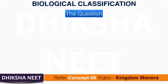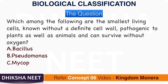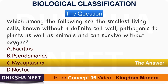Question 2: Which among the following are the smallest living cells, known without a definite cell wall, pathogenic to plants as well as animals, and can survive without oxygen? A. Bacillus. B. Pseudomonas. C. Mycoplasma. D. Nostoc. The answer is option C, Mycoplasma.